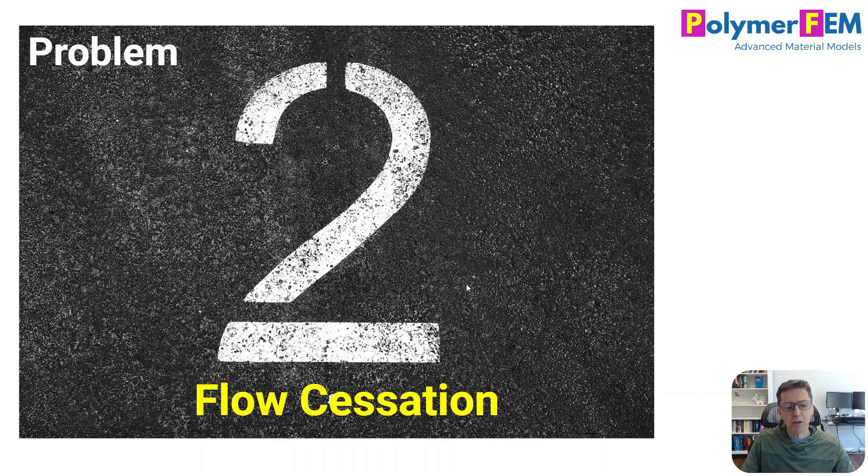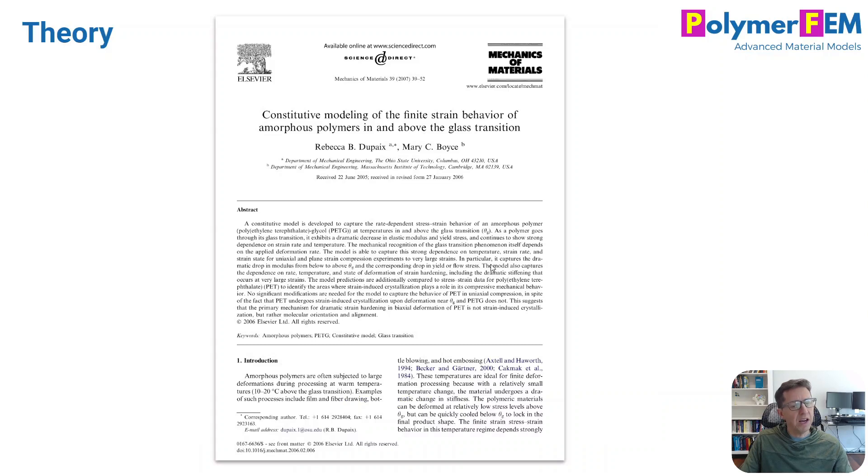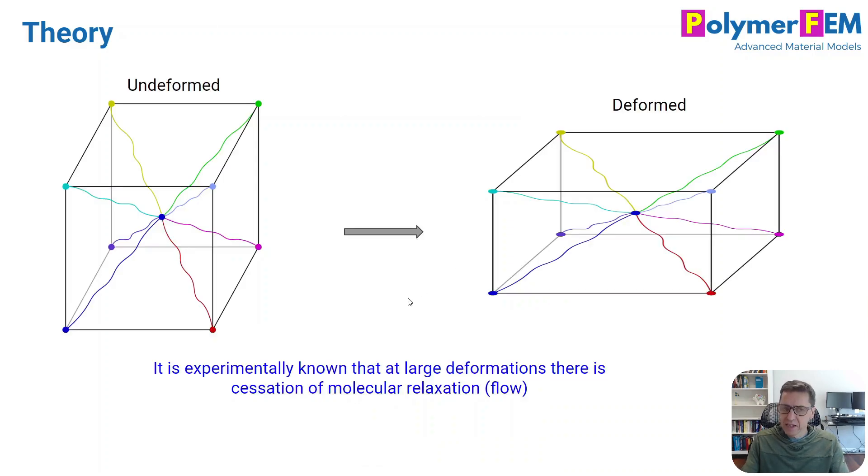And the second problem I want to talk about is something related to flow cessation or how the stress-strain curves become more or less independent of strain rate at really large strains. And the approach I will take here is similar to what's done by Dupaix and Boyce in the paper they wrote some time ago. So this is a paper from the research group at MIT that I worked with back in the day.